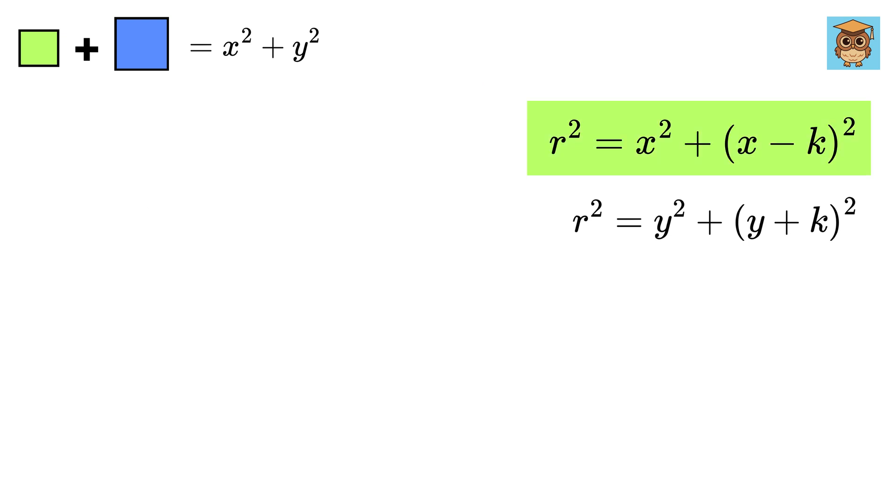Consider this equation. Take x squared on the left-hand side to get this. Now take square root on both sides to get square root of this equals x minus K.